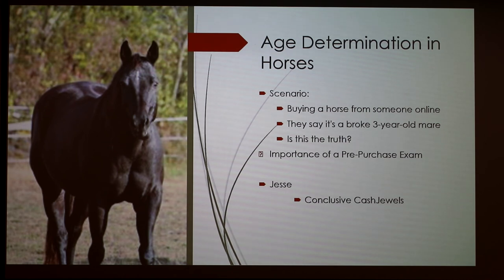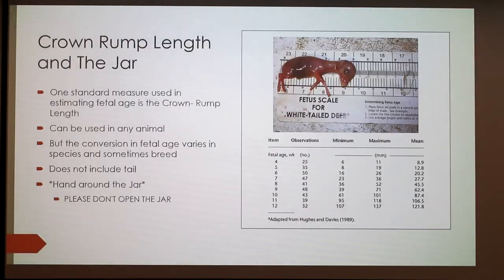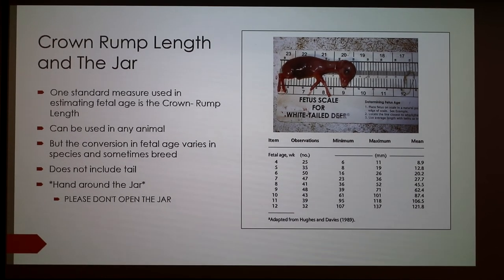The class was asked if anyone knew what was in the jar. The answer: they are feline. For age, guesses ranged around 14 days, then 30 days was confirmed — about halfway through fetal development. The vet's estimate using the crown rump chart was pretty accurate. The teacher emphasized that the table's minimum, maximum, and average values are important because there will always be variation — the runt of a litter will always be at the minimum. Breed matters too: a Chihuahua and a Great Dane will be different sizes at the same fetal age.